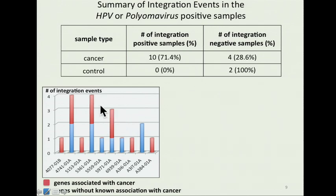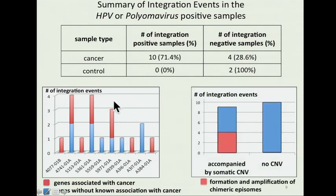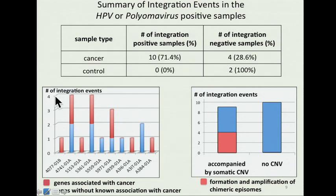We also noticed another interesting fact: almost half of all integration events are accompanied by somatic copy number changes. For example, in one bladder tumor, HPV insertion replaces a large part of the Notch1 gene, leading to a heterozygous loss of this region. However, the most fascinating cases are those where we see amplification of both viral and human regions. In at least four tumors, we think that such amplification happens after the formation of circular chimeric viral-human epizomes. In the next couple of slides, I will show one example of such an epizome.